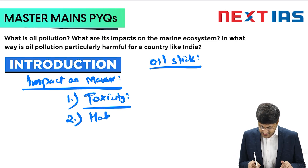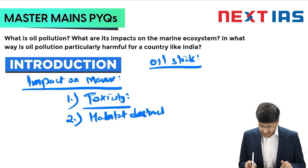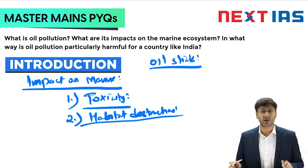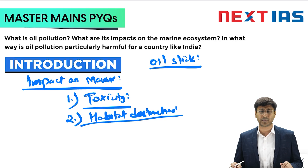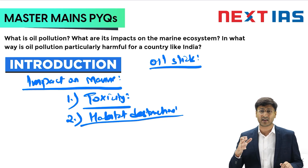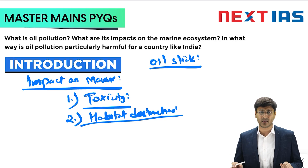The second impact is habitat destruction. Oil coats and damages various habitats like mangroves and shrubs. A good example is the Prestige oil spill in 2002 off the coast of Spain, which drastically reduced the phytoplankton population and badly affected marine diversity.